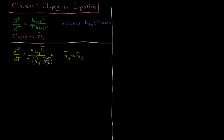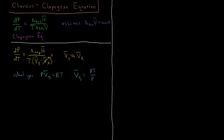We set the liquid molar volume to zero and neglect it, since it is a small perturbation relative to the molar volume of the gas. Then, for an ideal gas, PV = nRT, so P·V̄_gas = RT, meaning the molar volume of the gas equals RT/P. We substitute V̄_G = RT/P into the equation.